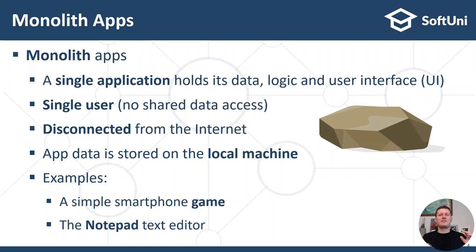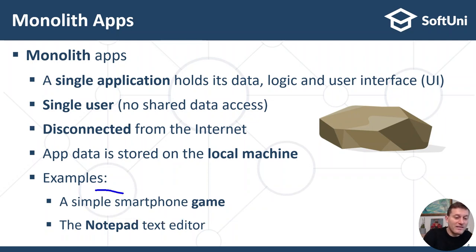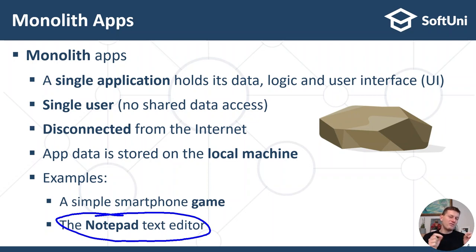Examples of apps developed under the monolith app architecture are, for example, a simple smartphone game. You install the game and play it on your mobile phone or laptop without accessing the internet. You play alone without any interaction with other players over the network — this is a standalone app, a monolith app. Another example is the Notepad text editor on your computer, where you can open local text files, edit them and save them, with no interaction with other users, no shared data, no communication over the network. Notepad works by itself and is designed for a single user on a single machine.